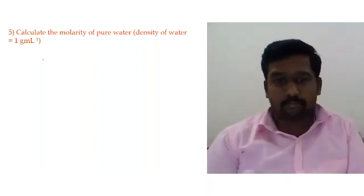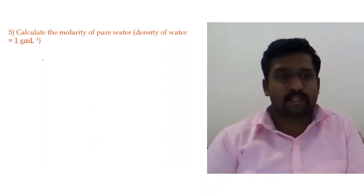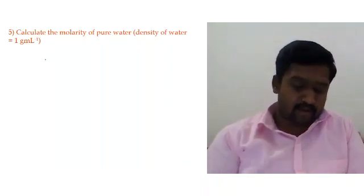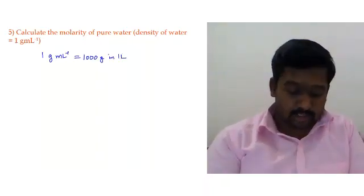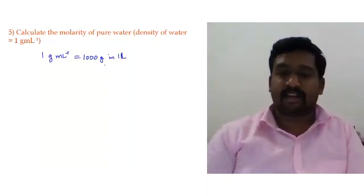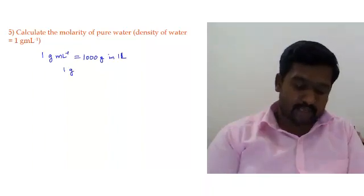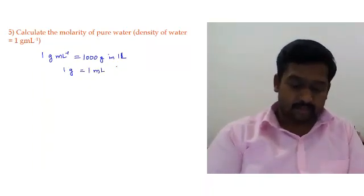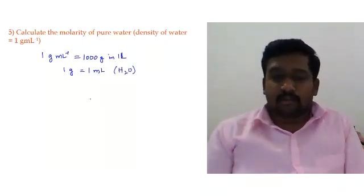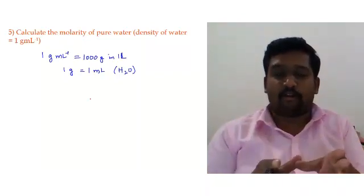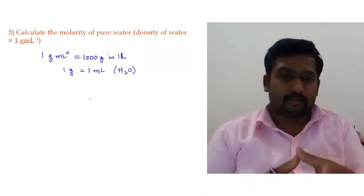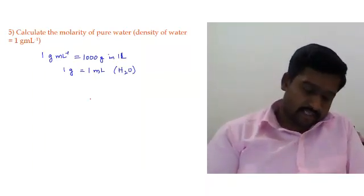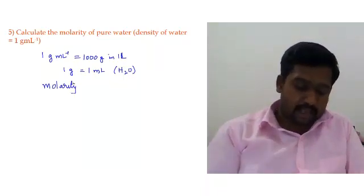Problem 5: Calculate the molarity of pure water. The only data given is density of water = 1 gram per ml, which means 1000 grams in 1 litre. Since density of water is 1 g/ml, 1 gram of H₂O equals 1 ml of water. Using this, we can find molarity, which is calculated as number of moles divided by volume.